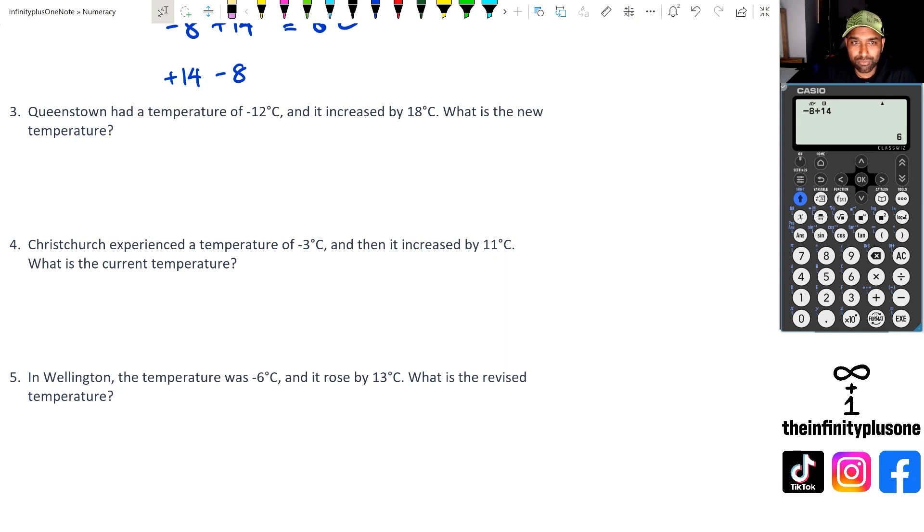So Queenstown had a temperature of minus 12. And now it increased by 18 degrees. So we're actually going to go plus 18. This is the same thing as saying 18 minus 12. So we're going to get once again, we're going to get six degrees. Let's look at number four.